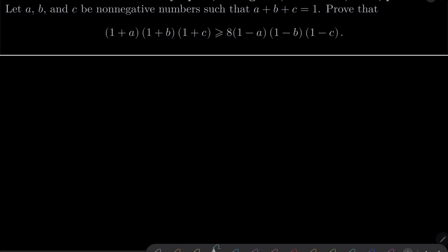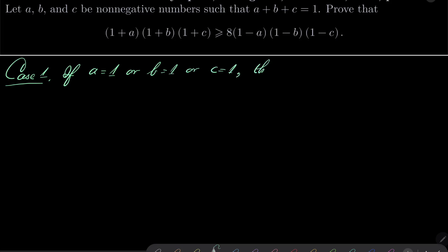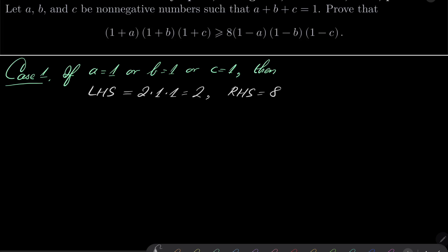Case number 1: consider if a is 1, or if b is 1, or c is 1. If this is the case, notice that the sum of these numbers is 1, so if one of them is 1, the other two numbers must be 0. So the left hand side is 2 times 1 times 1, which is 2, while the right hand side is 8 times 0 times 1 times 1, which is 0. So our inequality holds and is strict — the left hand side is strictly greater than the right hand side.